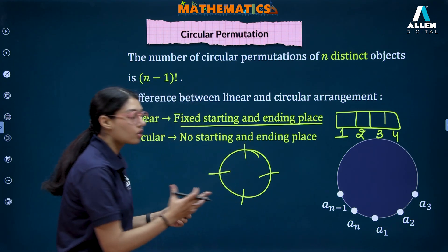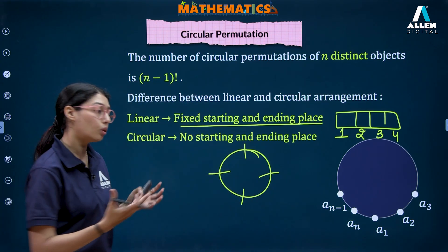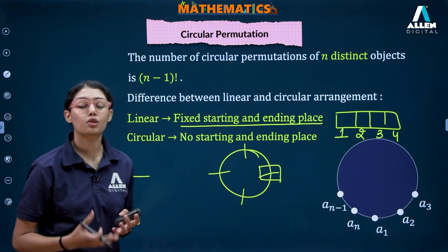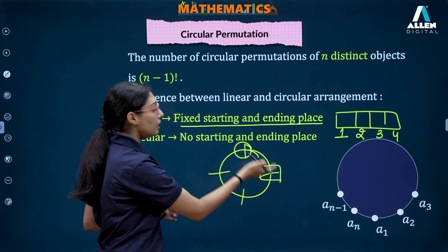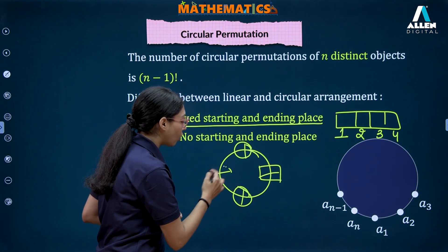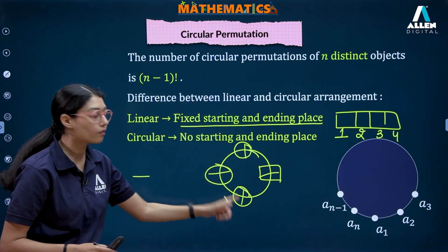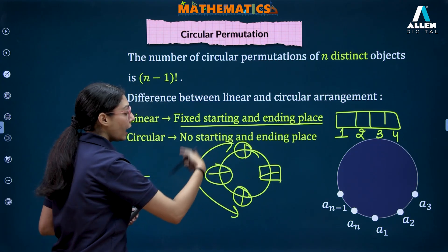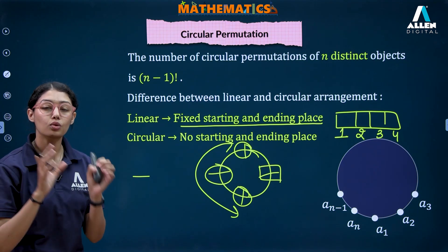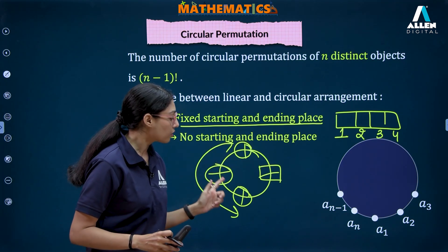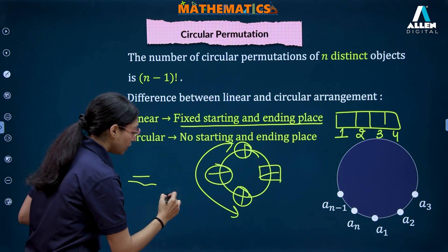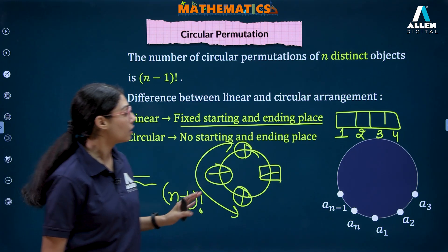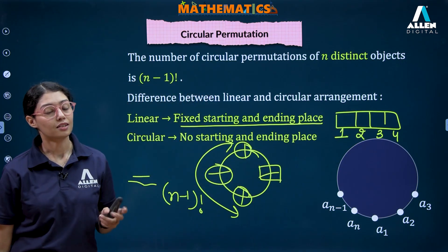In a circular arrangement, the first person can sit anywhere — there's no fixed identity for positions yet. Once the first person is placed, the remaining positions gain meaning relative to them, such as left side, right side, or opposite. So the actual arrangement involves only the remaining n minus one people on n minus one positions, which can be done in n minus one factorial ways. That is the fundamental difference between linear and circular arrangements.